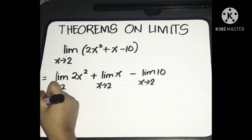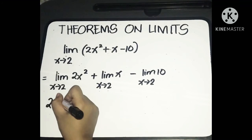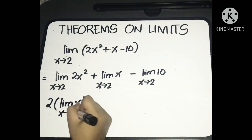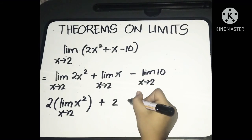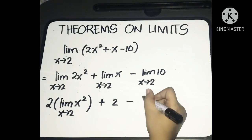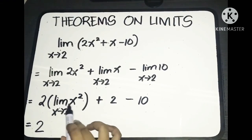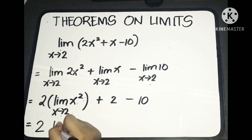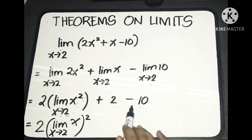Simplifying: we can take the constant 2 out of the first limit, giving 2 times the limit of x² as x approaches 2. Plus the limit of x as x approaches 2, which is 2. Minus the limit of constant 10, which is 10. So combining the constant terms: 2 plus (negative 10) gives us negative 8 remaining.